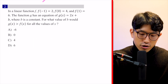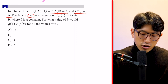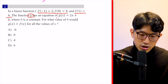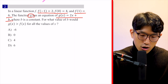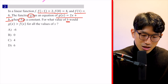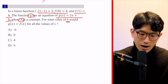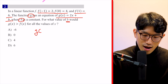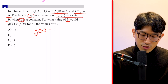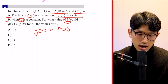Number two: in a linear function, we have three given coordinates. Function g has an equation shown here where B is a constant. For what value of B would g(x) be greater than f(x) for all values of x? So we need g(x) to be greater than f(x) and we're looking for the value of B that makes this true.